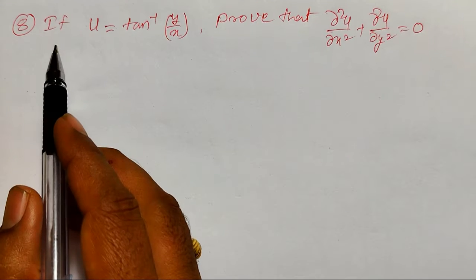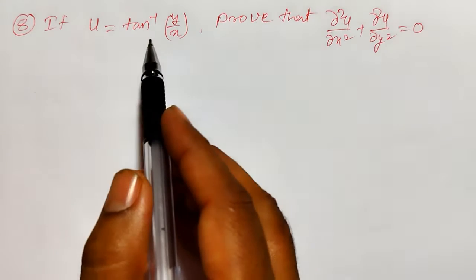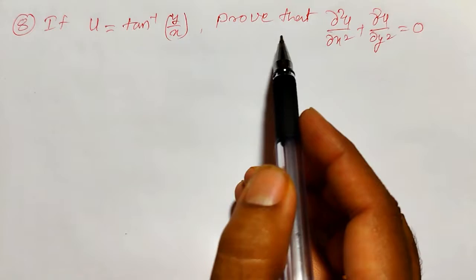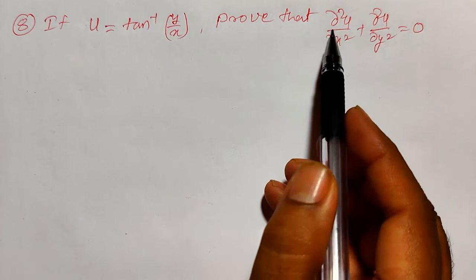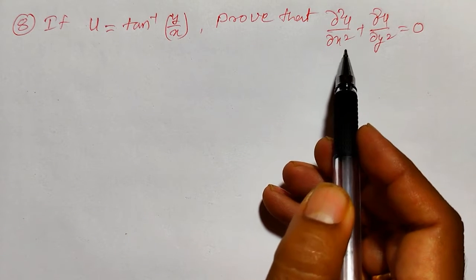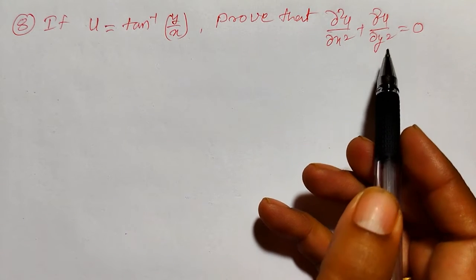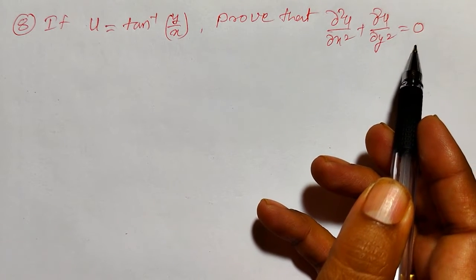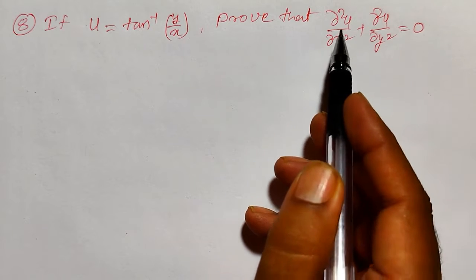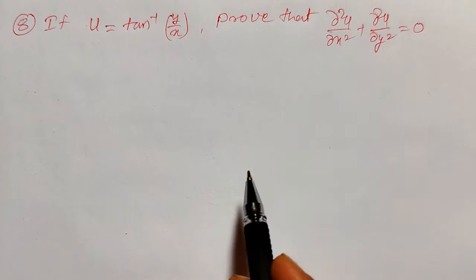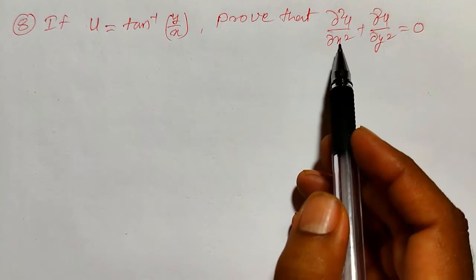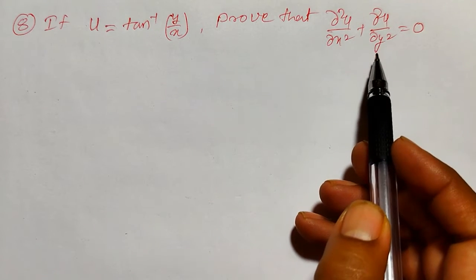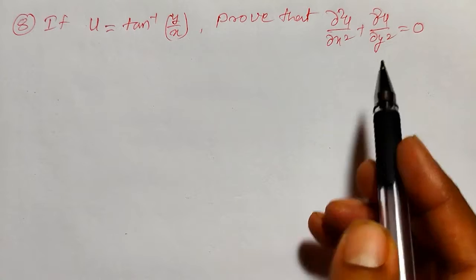If u is equal to tan inverse of y by x, then I am going to prove that ∂²u/∂x² plus ∂²u/∂y² is equal to 0. Here these are the second order partial derivatives of u with respect to x and with respect to y.